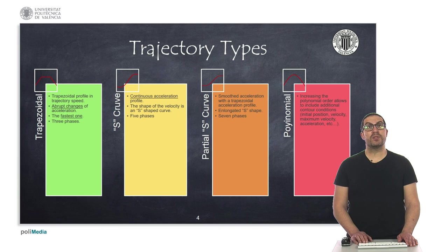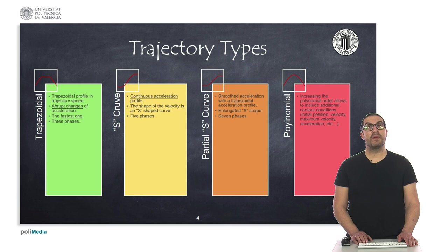A trapezoidal trajectory consists of a trajectory with a trapezoidal profile in the trajectory speed, and generates abrupt changes in the acceleration. It's the fastest one under the same maximum velocity and acceleration constraints, and it has three phases, as we will see.